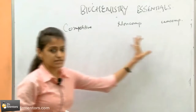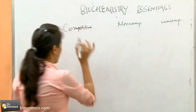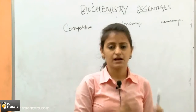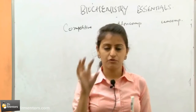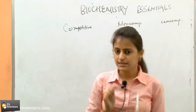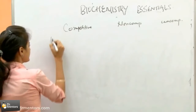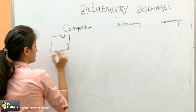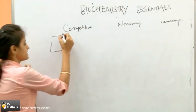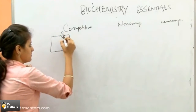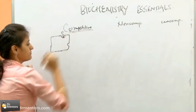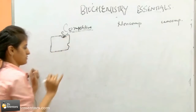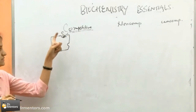Now we see what the three types of enzyme inhibition are. Competitive means, as the name says, it competes with the substrate for the site to attach to the enzyme. So this is an enzyme, and the substrate binds here. In competitive inhibition, the inhibitor will also bind at the same site as the substrate.